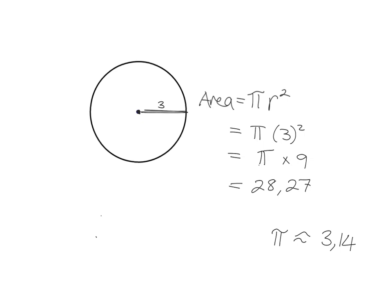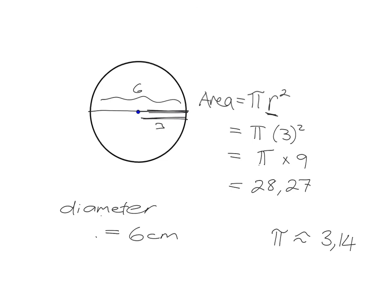The only slight complication they can add with circles is sometimes instead of giving you the radius, they tell you the diameter. For example, if the diameter of a circle is 6 centimeters, that means going all the way across the circle through the center is 6 cm. You need the radius for your formula, and the radius is always just half of the diameter. So you just do one extra step — divide the diameter by 2 to get the radius — before you can calculate the area.